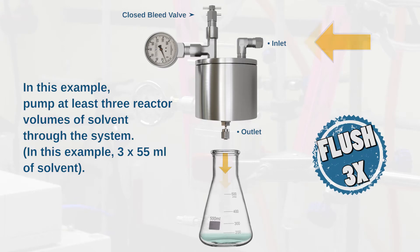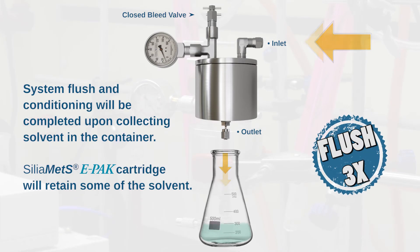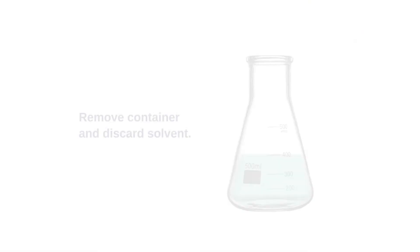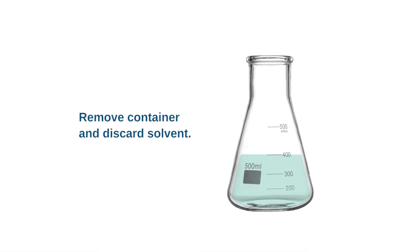In this example, pump at least three actor volumes of solvent through the system. System flush and conditioning will be completed upon collecting solvent in the container. SiliaMet E-PAK cartridge will retain some of the solvent. Remove container and discard solvent.